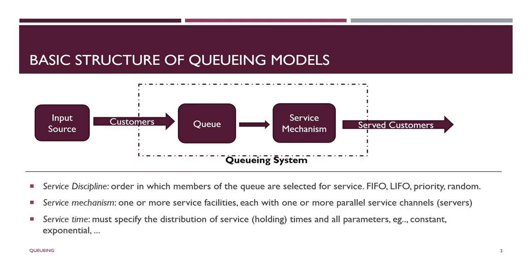The service mechanism: you can have one or more service facilities. Each facility can have one or more equal parallel service channels — these are the servers, kind of like the number of tellers in a bank. The service time: every individual, every entity that's going to come into the system and go into service has some kind of a random time that's drawn from a probability distribution assigned to it.